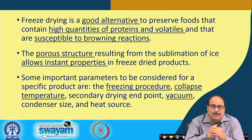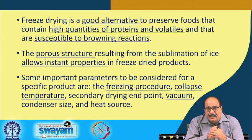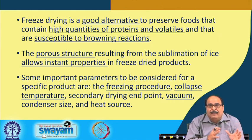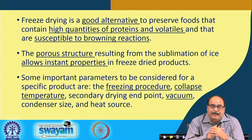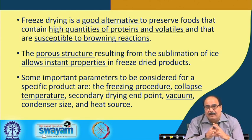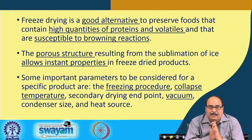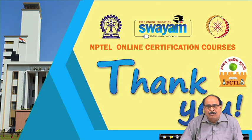In summary, freeze drying is a good alternative for foods that contain high quantities of proteins and volatiles, and also for foods susceptible to browning reactions. The porous structure resulting from sublimation of ice allows instant rehydration properties, as seen in freeze-dried instant tea and coffee. Important parameters to consider for a specific product include freezing procedure, collapse temperature, secondary drying end point, vacuum condenser size, and heat source. If all these parameters are properly controlled and conducted based on the food characteristics, this becomes a very good process for drying high-value food materials.